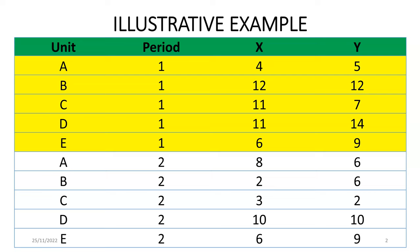All of these five firms are in one period — period one. You can see that in the yellow frame, all of them are in period one. The firms are using one input to generate one output.